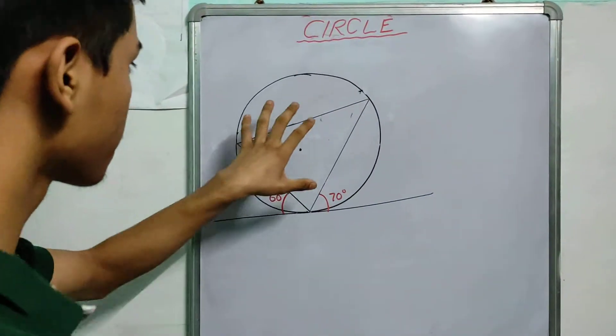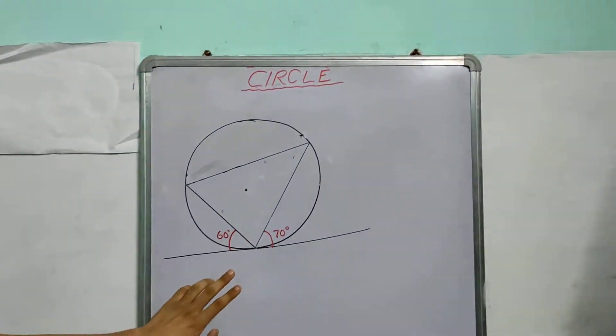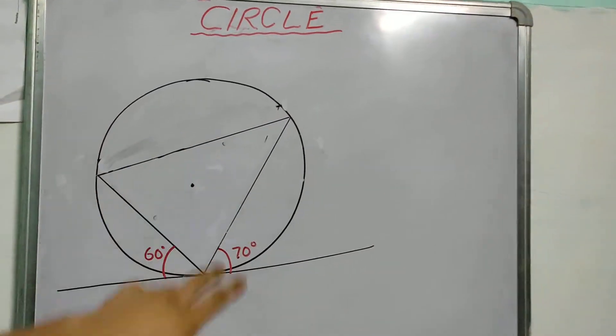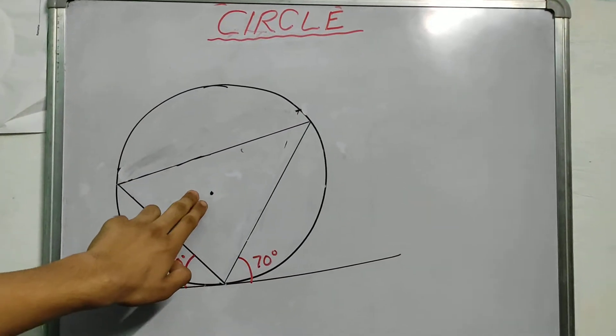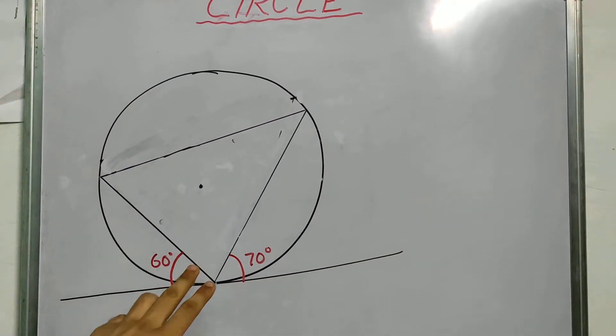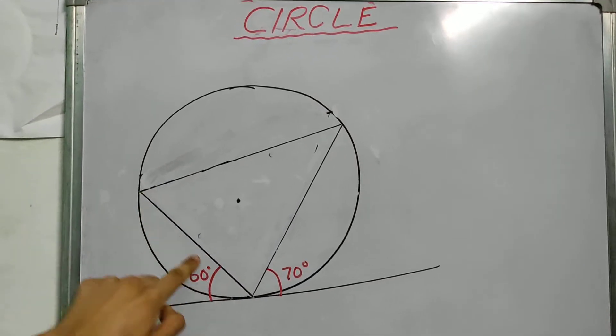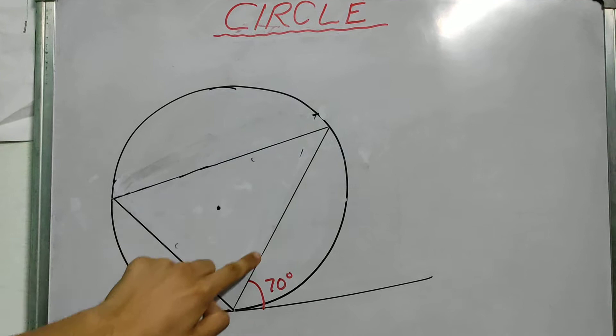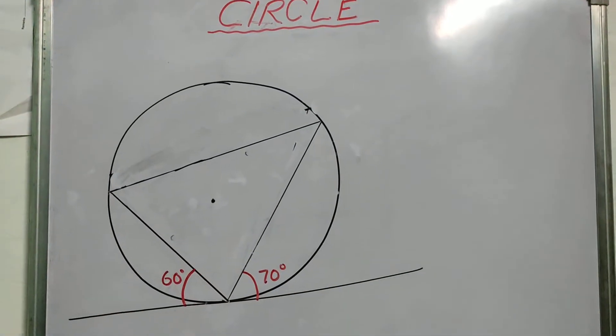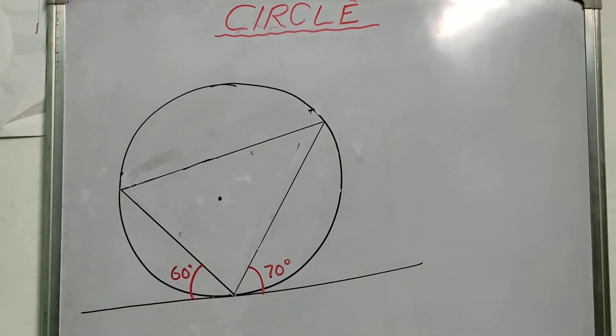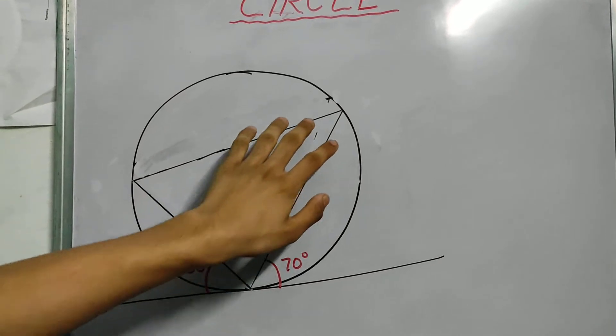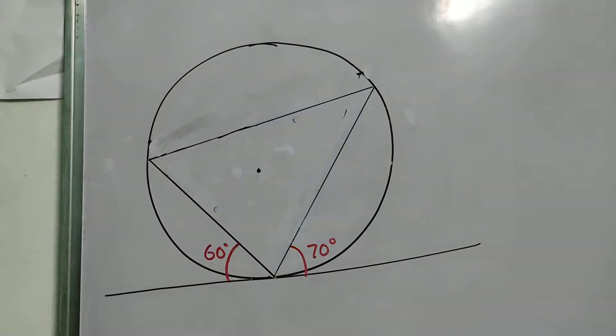Hi, today I've got a question for you. Have a look at this. This is a circle. This is the circle's center right over here and these are the angles. This is 60 degrees. This one. And this is 70 degrees.